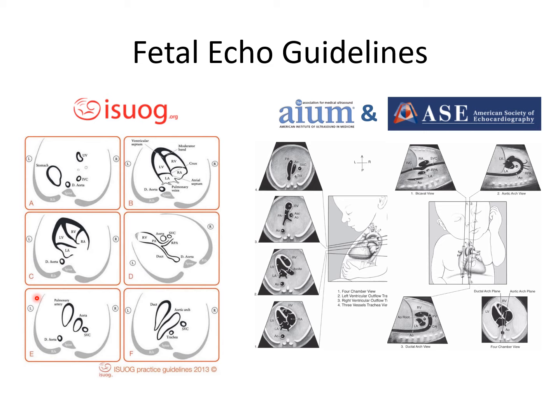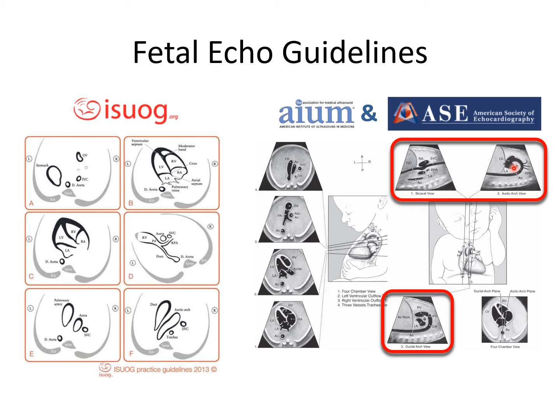As part of the societal guidelines, you can see the difference between the two sets of guidelines. ISUOG has basically the same views — all transverse views starting in the abdomen, then coming up above the diaphragm to the four-chamber view and outflow tracts, three-vessel trachea, and the V of the arches, with no sagittal views. Whereas the AIUM-ASE guidelines depict sagittal views through the fetus — the arches and bicaval view — and also add short-axis ventricular views.